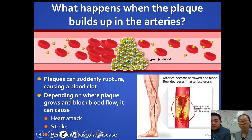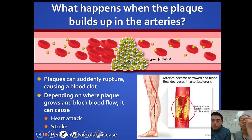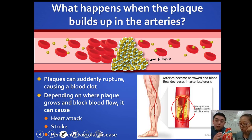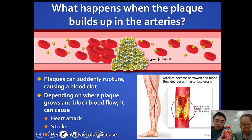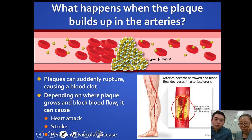When the plaque ruptures, pieces fall off and get stuck in small capillaries — that's where a blood clot forms. Depending on where it happens, if it's in the heart, it may cause a heart attack. The coronary artery specifically — if there's a block and blood doesn't get to the heart muscle tissues, that's what causes a heart attack, because you're restricting oxygen from reaching other parts of your heart.